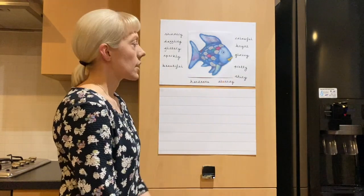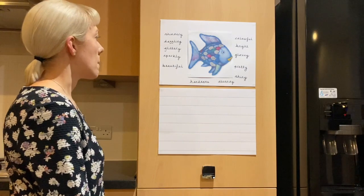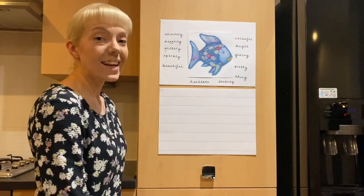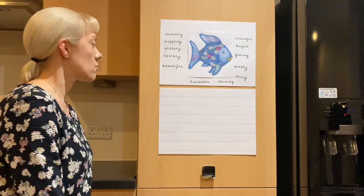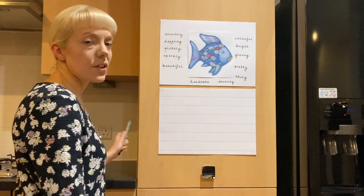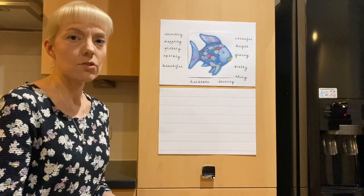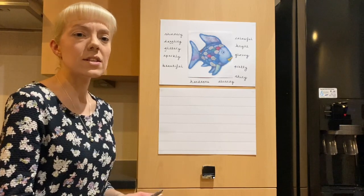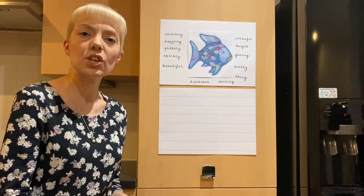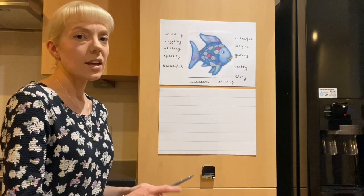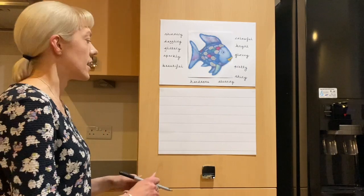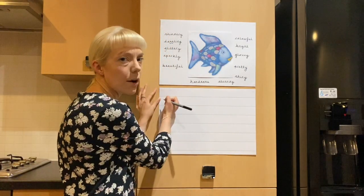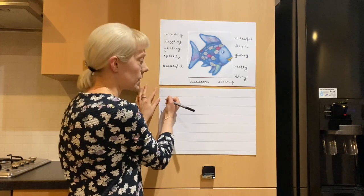Okay so I can use my adjectives now to think of and write some sentences to describe what Rainbow Fish looks like. Do you think you can help me write some? My first sentence is going to be: Rainbow Fish is shiny and bright. Can you help me write it? I need to start with a capital letter because it's a proper noun — it's his name, isn't it?